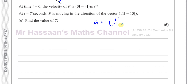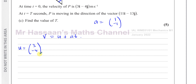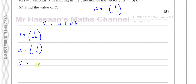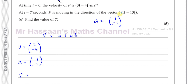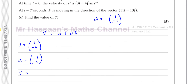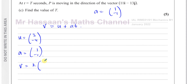The acceleration is constant at (1, −1), so we can use the SUVAT equation v = u + at. The initial velocity u = (3, −4). At time t, the velocity is in the direction of 11i − 13j, but we don't know its magnitude — only the direction. So the velocity at time t can be written as k × (11i − 13j) for some scalar k.